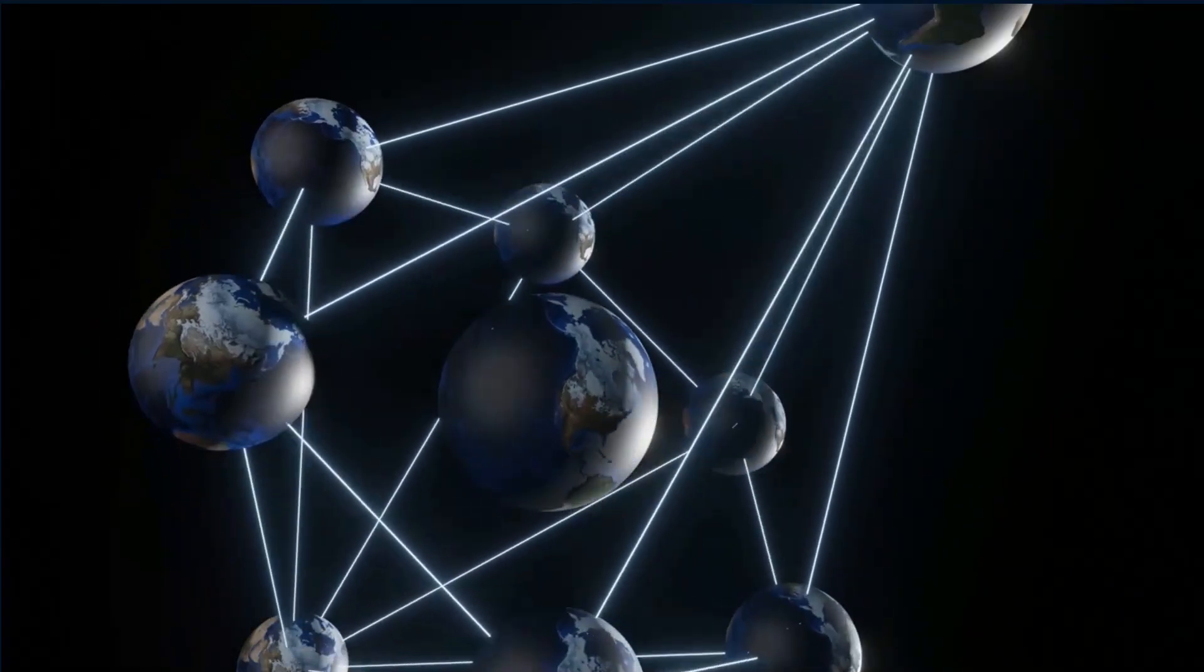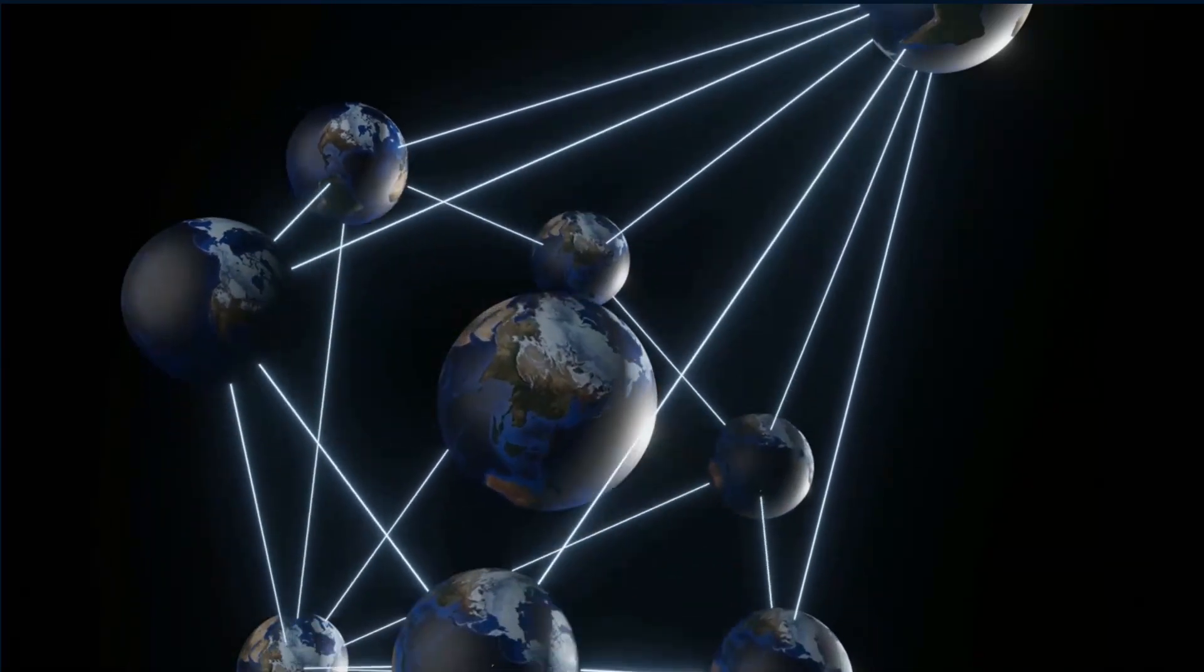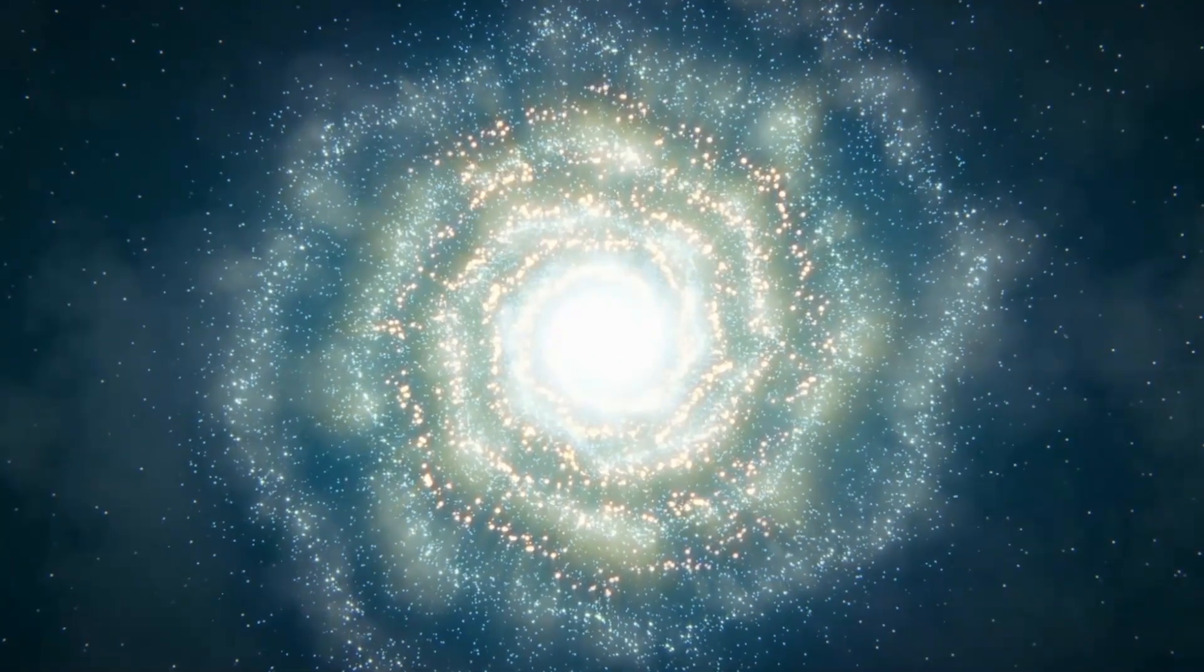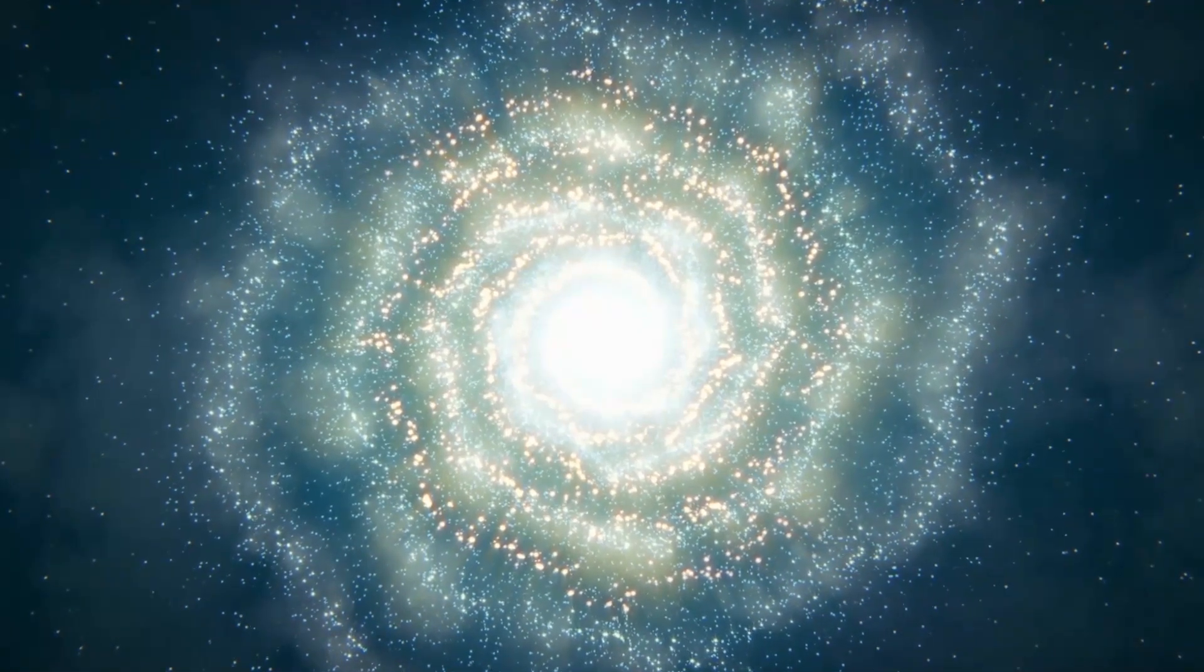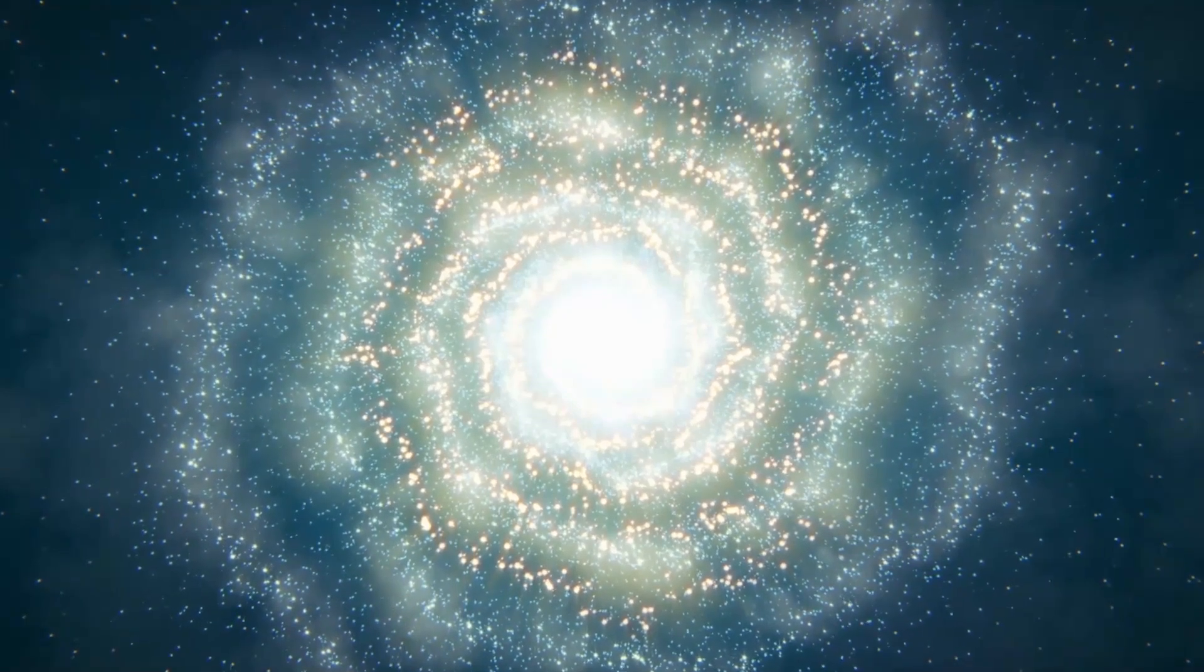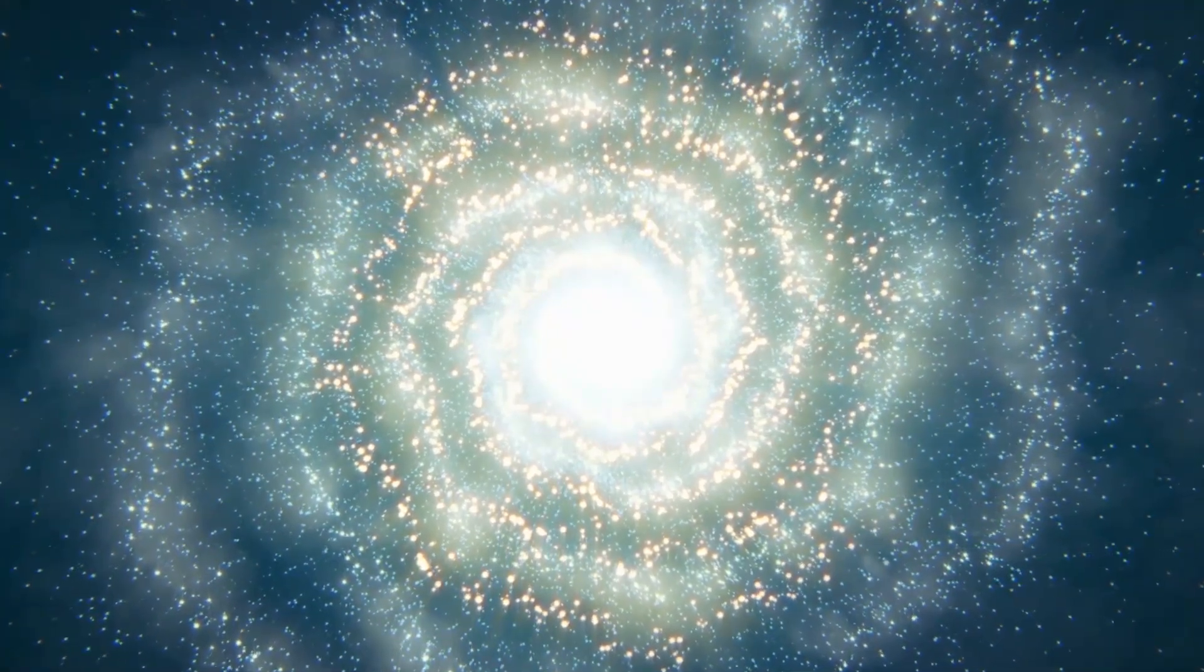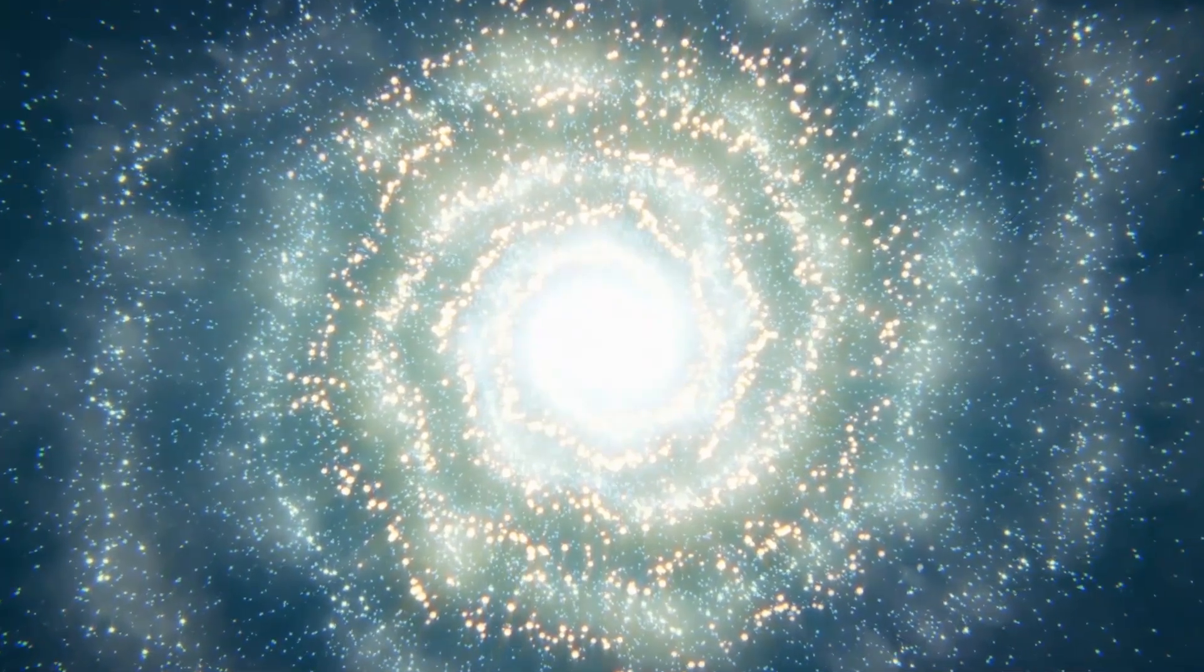But the many worlds theory proposes instead that every time one state or outcome is observed, there is another world in which a different quantum outcome becomes reality. This is a branching arrangement in which, instant by instant, our perceived universe branches into near infinite alternatives. Those alternate universes are completely separate and unable to intersect, so while there may be uncountable versions of you living a life that's slightly or wildly different from your life in this world, you'd never know it.